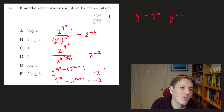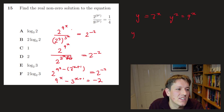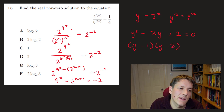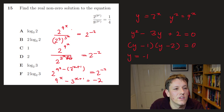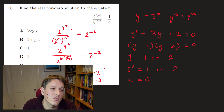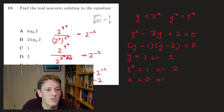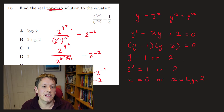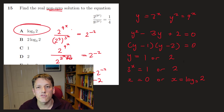This is a disguised quadratic. Let y = 3^x, so y² = 9^x and 3^(x+1) = 3y. The equation becomes y² − 3y + 2 = 0, factoring as (y − 1)(y − 2) = 0, giving y = 1 or y = 2. Since y = 3^x, either x = 0 or 3^x = 2, i.e. x = log₃(2). The non-zero solution is x = log₃(2), so the answer is A.